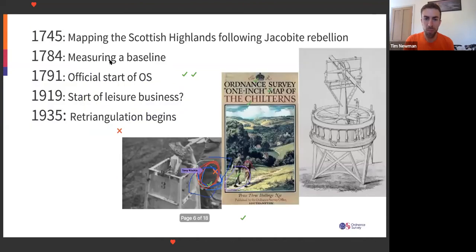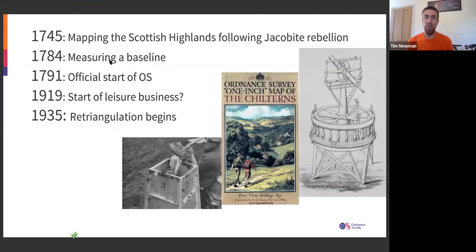So a little bit of history to start with. The official start of OS was 1791, but the foundations were laid a little bit earlier. In the middle of the 18th century, the Jacobite rebellion was happening in Scotland, and the government of England realised they hadn't really got a clue where all these people were hiding — there were vast tracts of Scotland which were pretty much unknown, and there was no single decent map. So the mapping of Scotland was started in the mid-18th century, before OS was officially a thing. This was a military endeavour, but the personnel and techniques were starting to pave the way for the full start of OS.